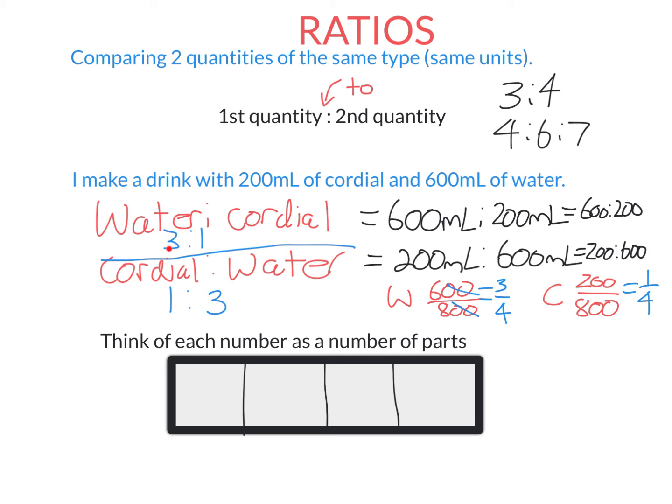As I said before, we're going to think of each of these numbers as parts. It's like the drink has been divided into 3 plus 1, 4 parts. Three of those parts water, 1 part is cordial.